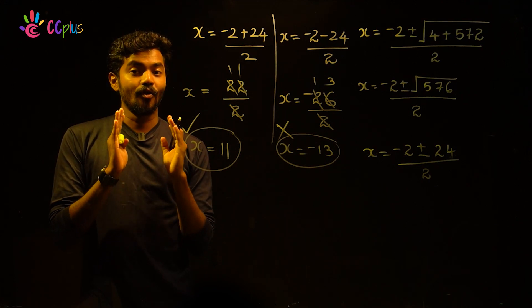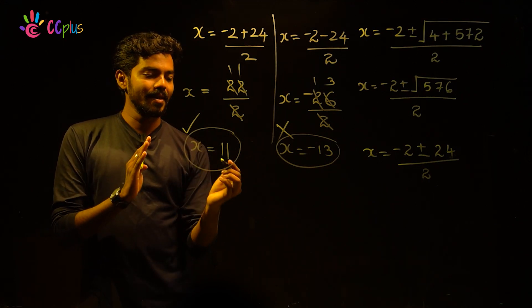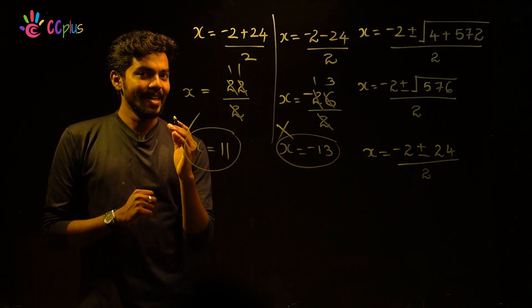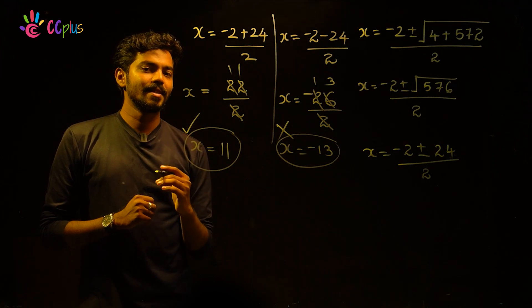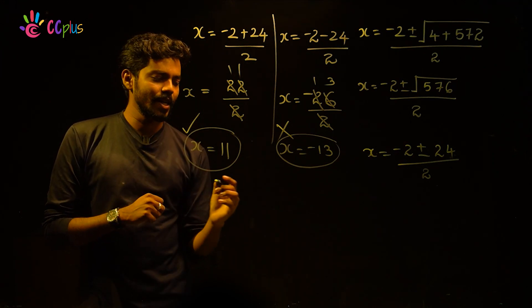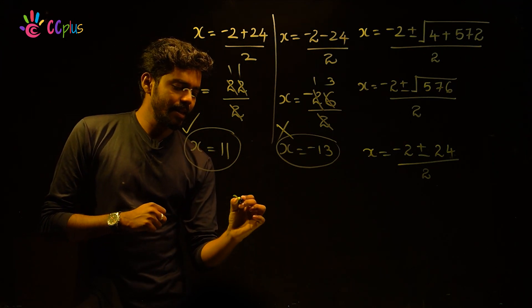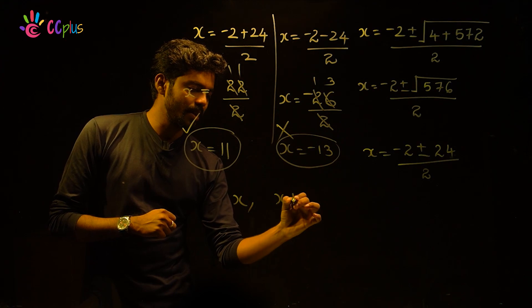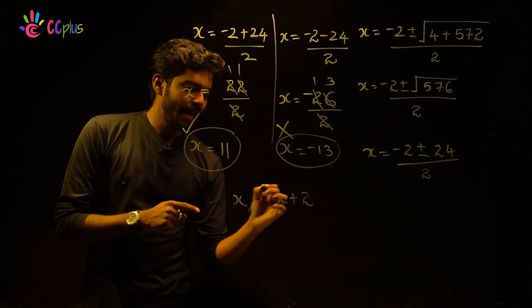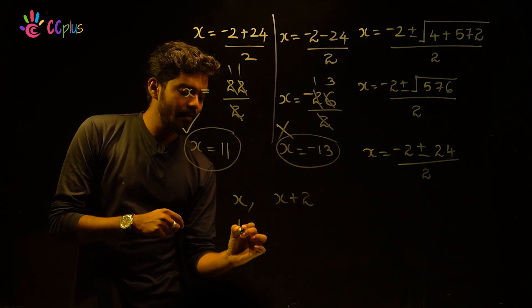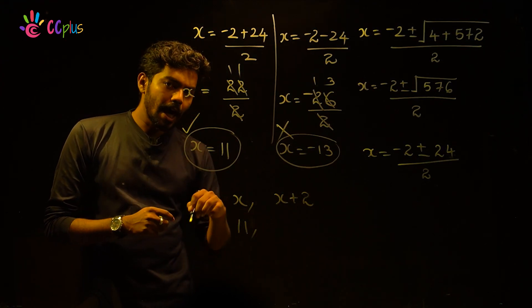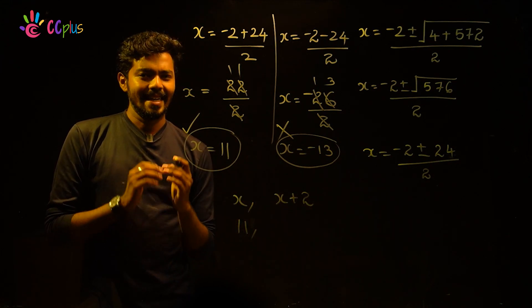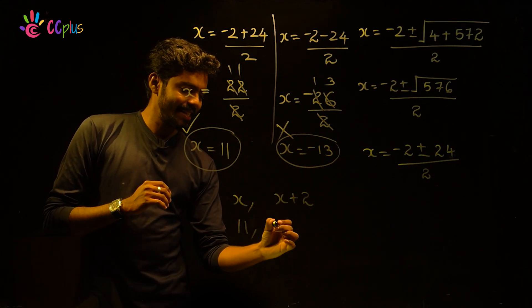The value of one number is 11. We add x plus 2, which is 11 plus 2, which equals 13. So the two consecutive odd positive integers are 11 and 13.